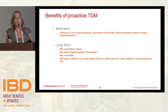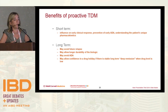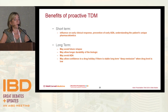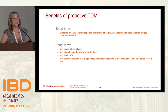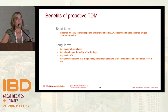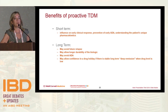Looking at drug levels may help. Short term, we can have a better early clinical response, perhaps prevent ADAs, and understand a patient's unique pharmacokinetics. Obesity, male gender, and disease activity may influence the way somebody handles their drug. In pediatrics, during the pubertal period we see much more variability in pharmacokinetics than when they turn 20 or 22.